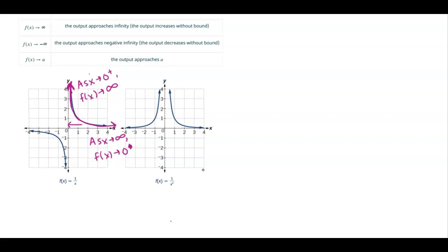As I approach 0 from the left-hand side, notice my function is going towards negative infinity. So as x goes to 0 from the left, f of x goes to negative infinity. Over here, we say as x goes to negative infinity, f of x goes to 0.